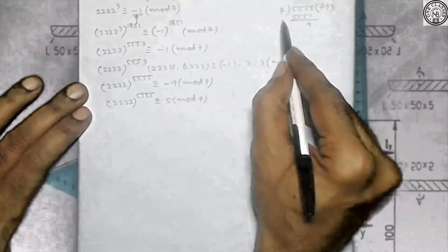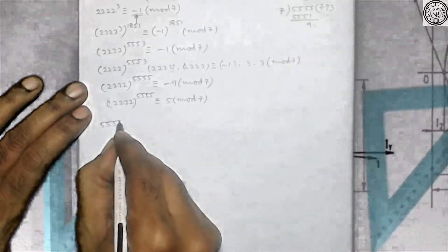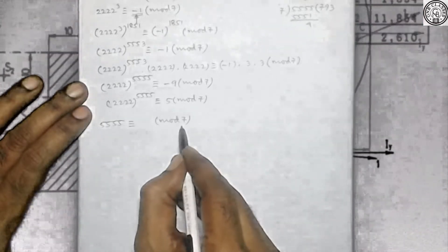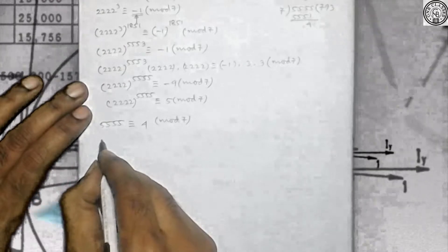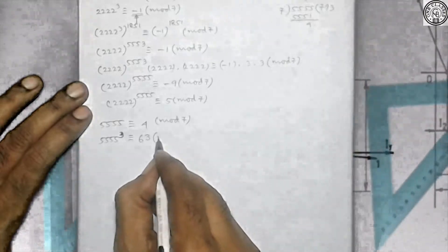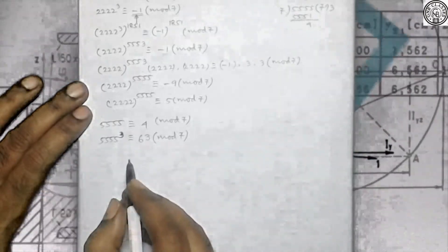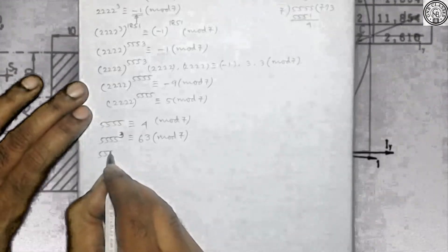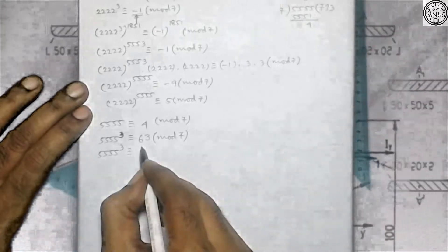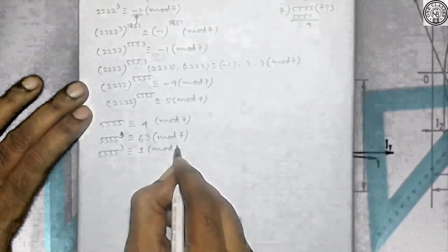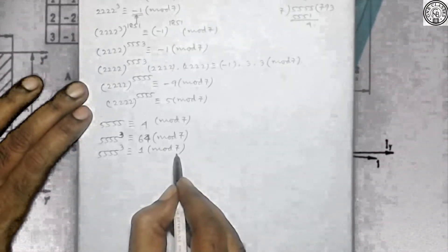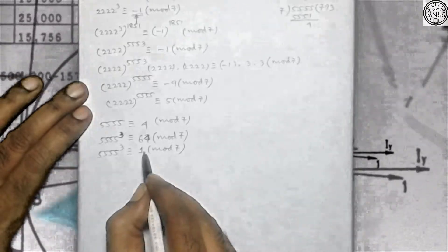Now let us start with √5. I have already shown that when √5 is divided by 7, the remainder is 4. Now let me raise its power to 3: it will be 4 cubed which is 64 modulo 7. 9 sevens are 63, so 1 will be the remainder. Now raise its power further to 740 to come closer to √2. This gives 1 to the power 740 modulo 7. So √5 to the power 2220 is 1 modulo 7.